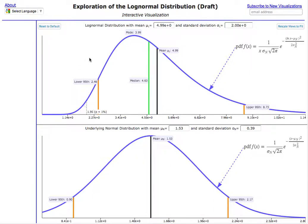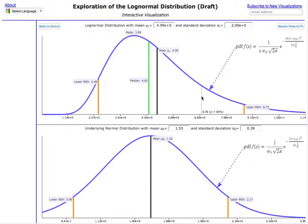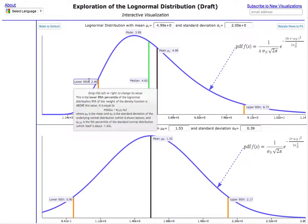So what you can do here, what I'm showing are a couple of the percentiles. Again, this is the lognormal distribution. I'm showing the lower 95th, the upper 95th, the median, the mean, and the mode. And you can move your mouse around at all these little markers to get some more information on it.